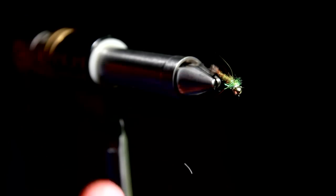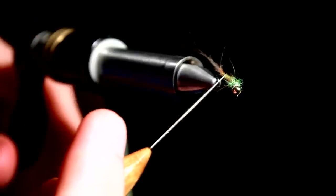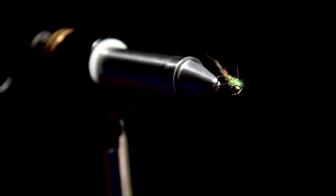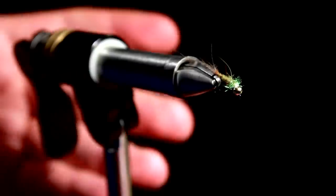Not only the ballast, the tungsten, makes the fly sink, but also how thin you make it. And therefore I want to make it rather sparse if I can. And also it is a mayfly nymph. They aren't as bulky as caddis pupae for example.